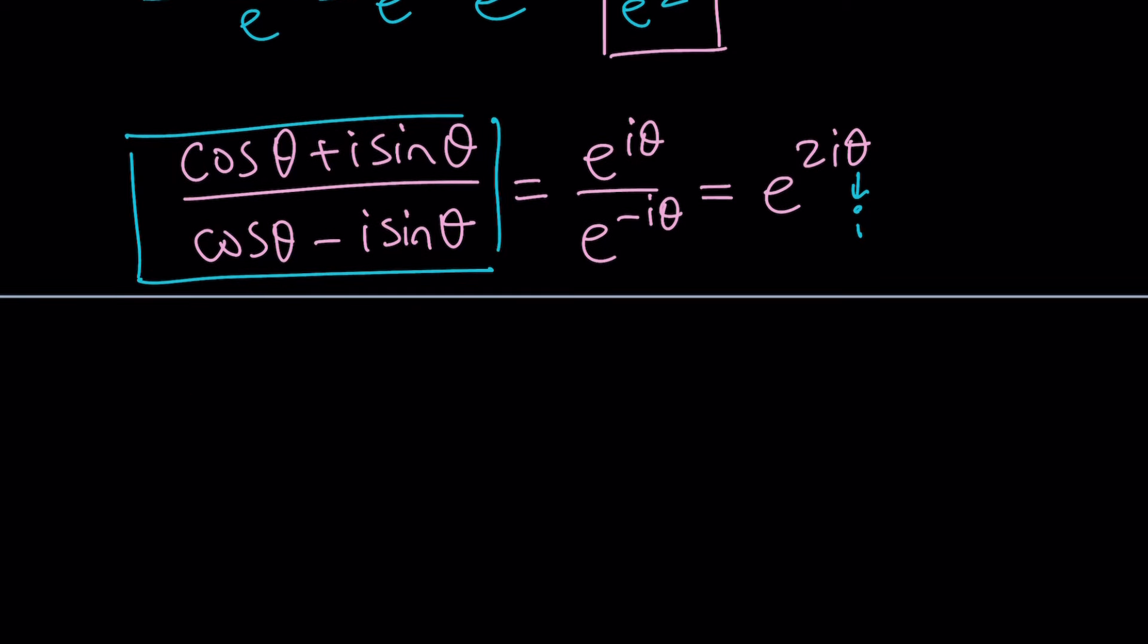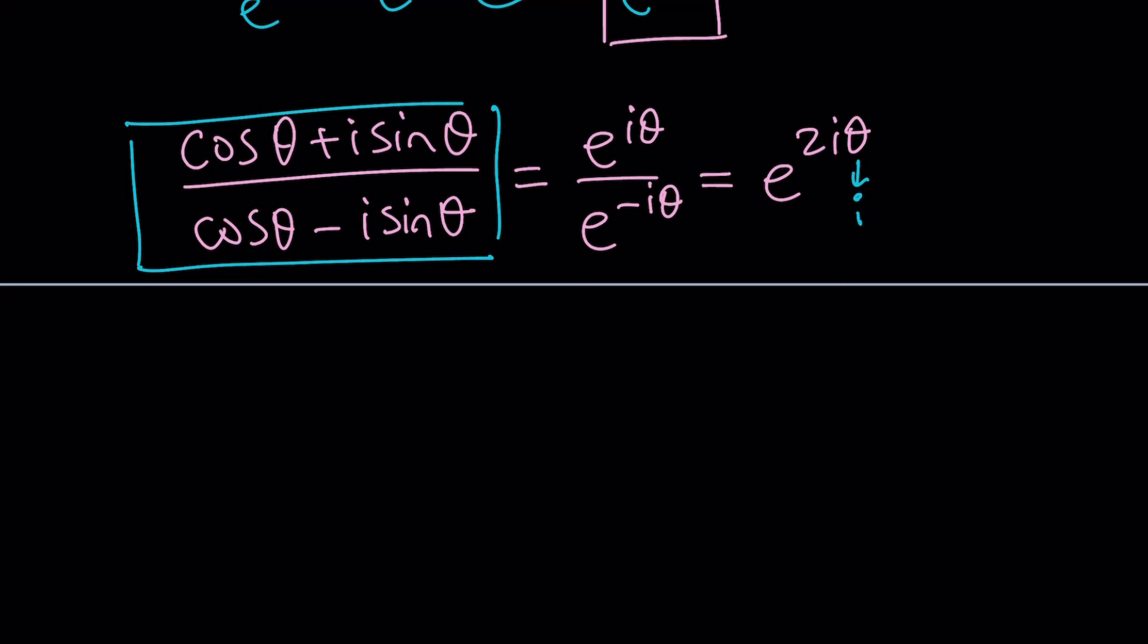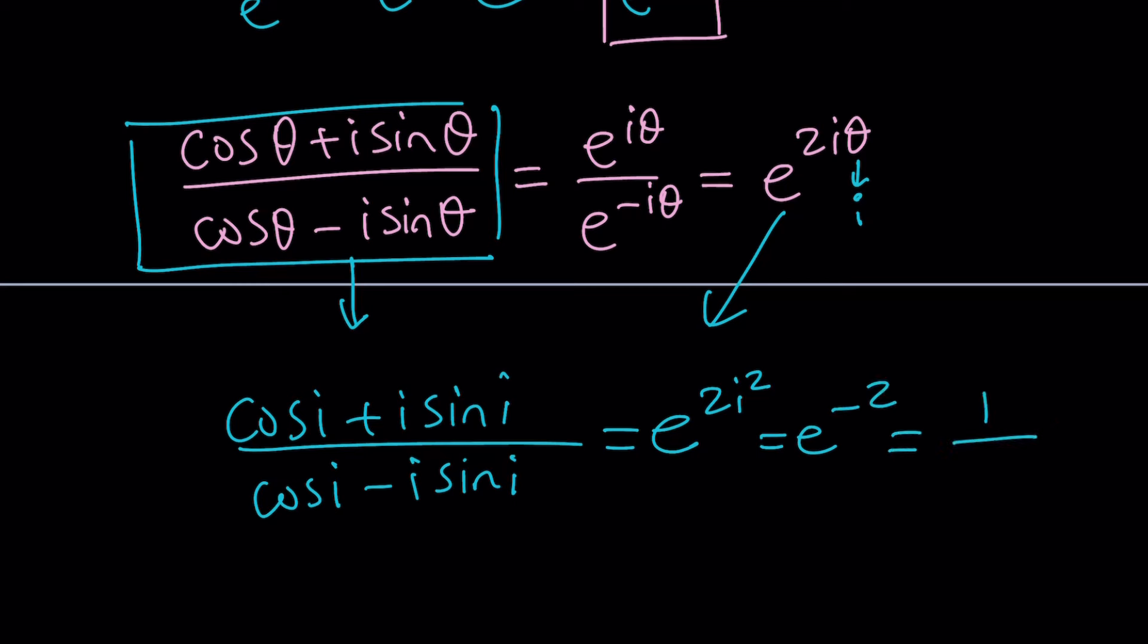And if we do that, we're going to get from here, cosine i plus i sine i divided by cosine i minus i sine i is going to be directly e to the power 2i times i, which is 2i squared. And that will be e to the power negative 2. And that will be written as 1 over e squared. Make sense? So we're getting the same answer just by considering the fact that dividing means subtracting the arguments, right? But in compact Euler's form, obviously, or polar form, it's a lot easier to do.